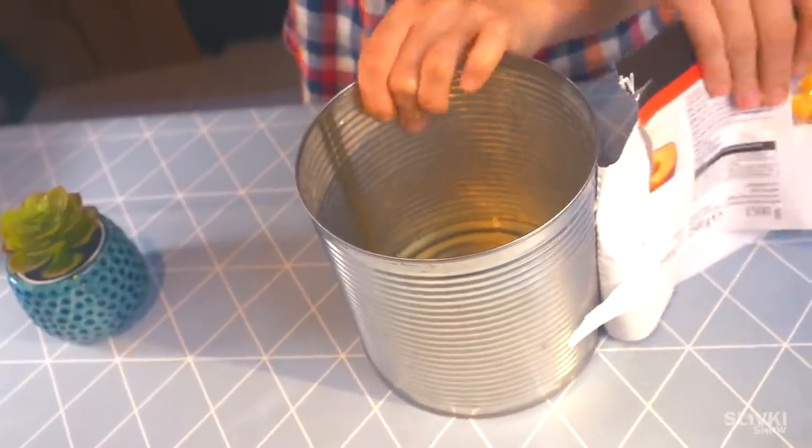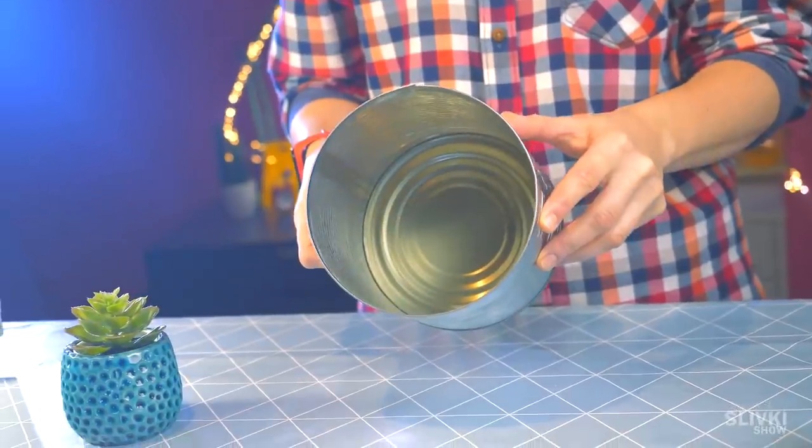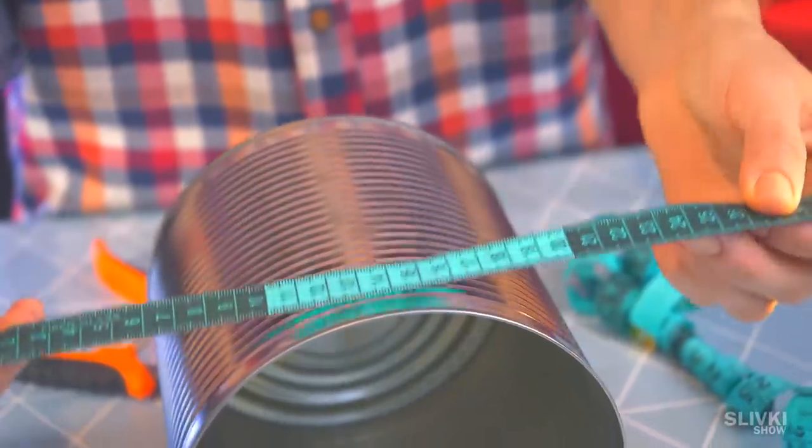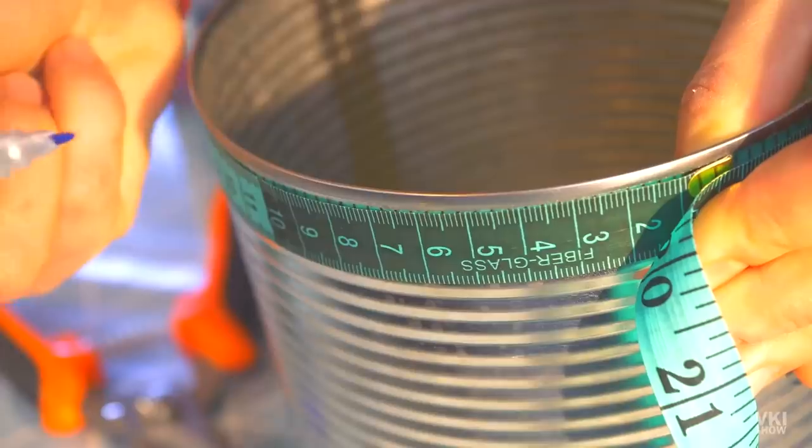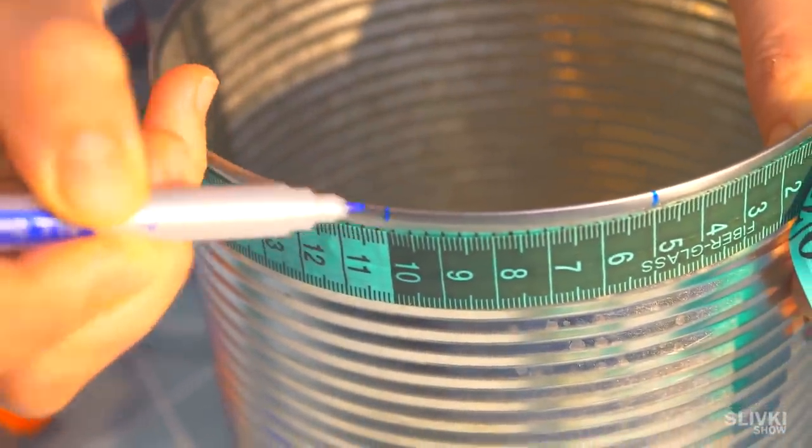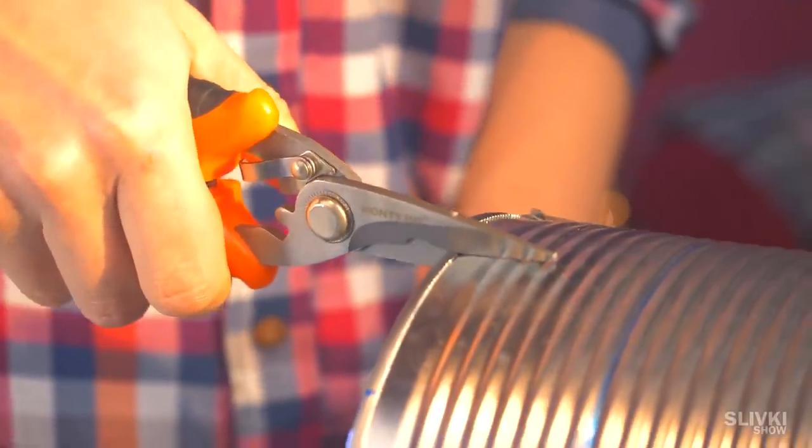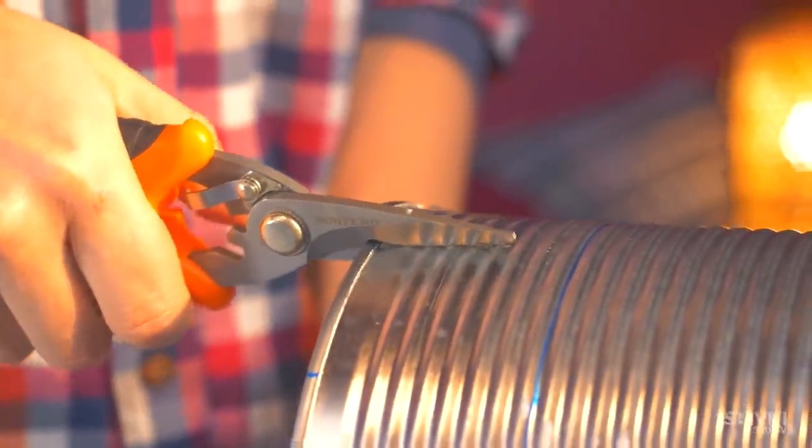If you bought this huge jar or can, you're very lucky, not so much with the content but the can itself, because you can make a very useful product. To begin with, with the help of a measuring tape, we draw a semicircle around the jar and make markings with a step of 5 cm.